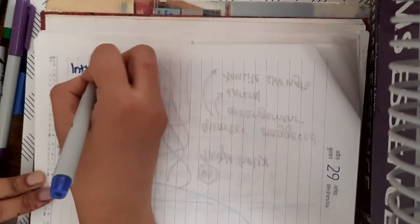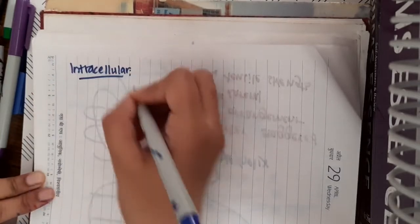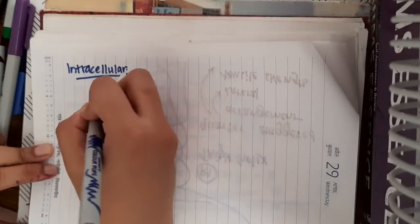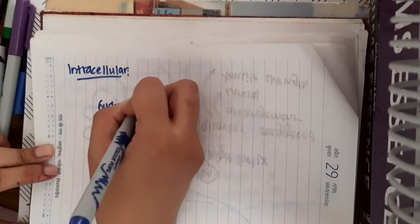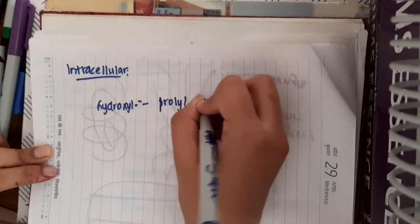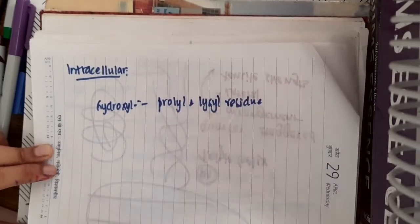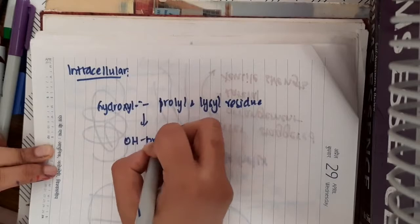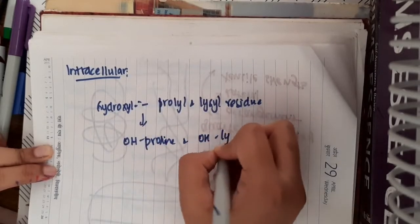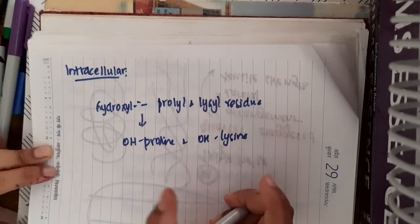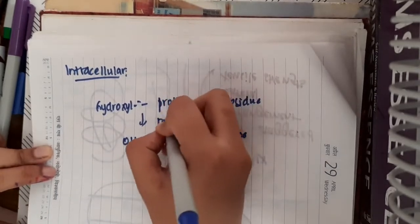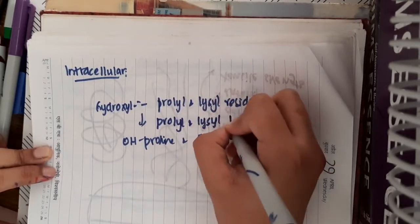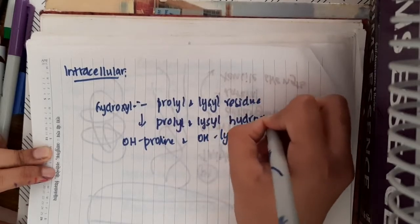Those which occur in the cell are called intracellular events. First and foremost, there will be cleavage of signal peptide. Then, you will see the hydroxylation of proline and lysine residues. The lysine residues and proline residues get hydroxylated, and it forms hydroxyproline and hydroxylysine. This hydroxyproline and hydroxylysine are formed in the presence, for this formation of hydroxyproline and hydroxylysine, we require proline and lysine hydroxylase.